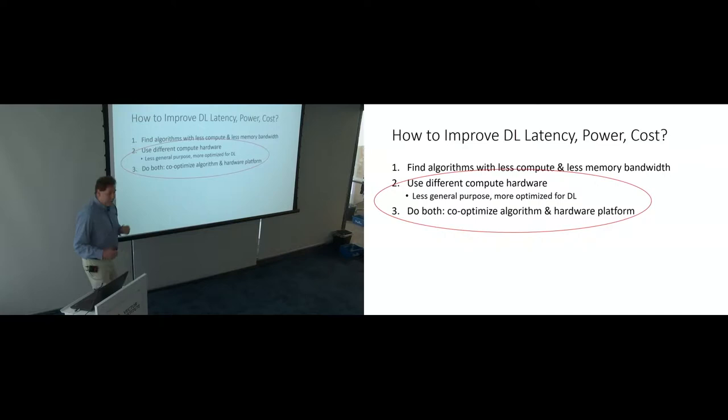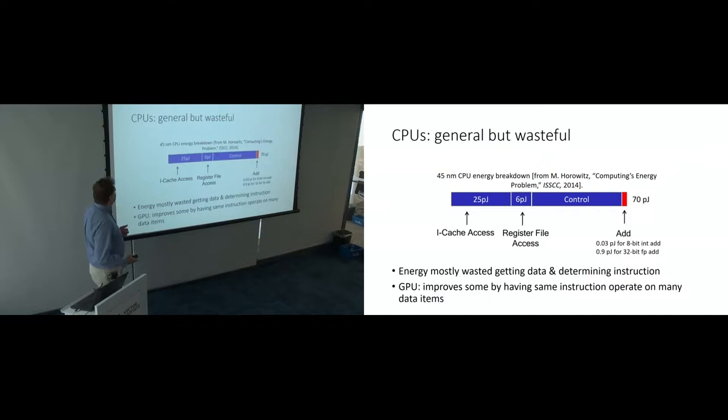But the other thing we can do is actually change the compute hardware. So make it less general purpose, more optimized for deep learning. And deep learning is important enough that this is happening. So developing computer hardware is very expensive. If this was a minor application, no one is going to go make specialized chips for it. Intel is not going to start optimizing their chips for it. But the compute load of deep learning is high enough and growing that this will happen. This is happening. And we can also do both. So if we change the compute hardware to be more efficient for today's algorithms, we can also look at, well, maybe the algorithm could further change to take advantage of features of that new hardware.